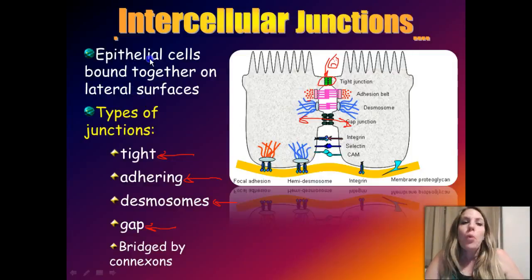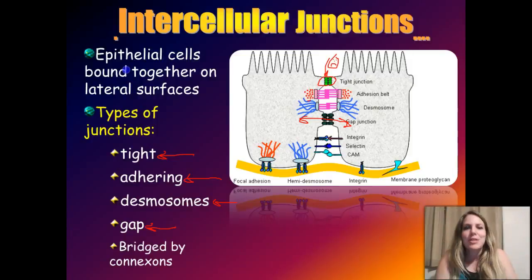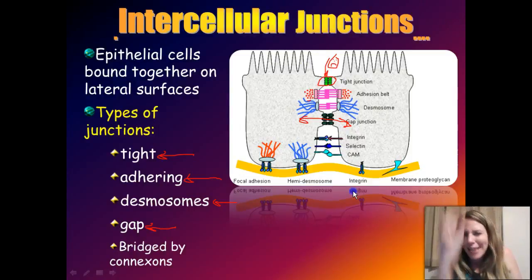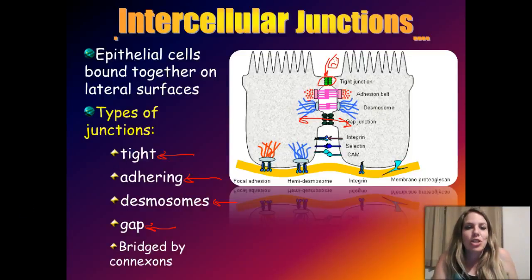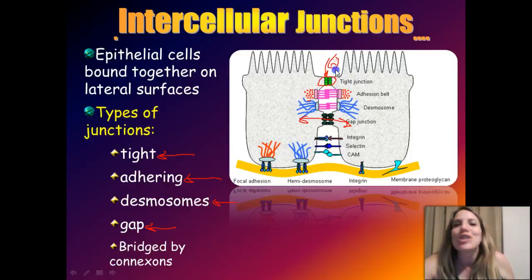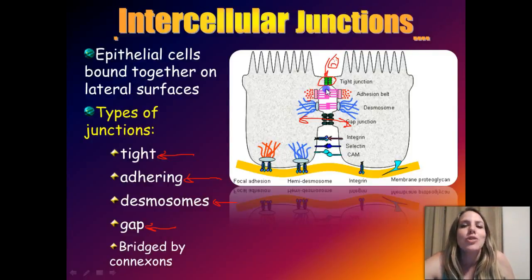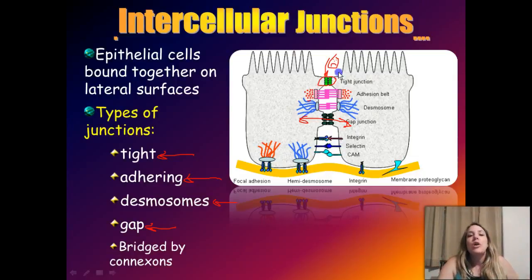AP Revealed can be your best friend! Before getting into the different categories, let's recap the intercellular junctions. Epithelial cells are bound tightly together on their lateral surfaces. Looking at a diagram showing two adjacent epithelial cells, we have four main types of intercellular junctions: tight junctions, adhering junctions, desmosomes, and gap junctions. Tight junctions go all the way around the cell — projections of the cell membranes stuck together tightly so nothing gets through.